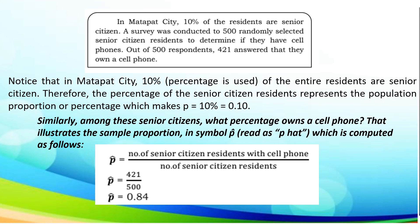Let us have an example. In Matapat City, 10% of the residents are senior citizens. A survey was conducted to 500 randomly selected senior citizen residents to determine if they have cell phones. Out of 500 respondents, 421 answered that they own a cell phone. Notice that 10% of the entire residents are senior citizens. Therefore, the percentage of the senior citizen residents represent the population proportion, which makes p equal to 10% or 0.10.